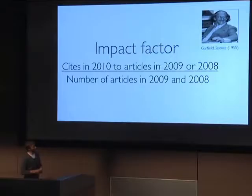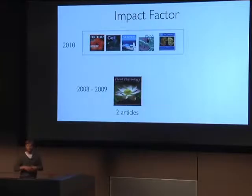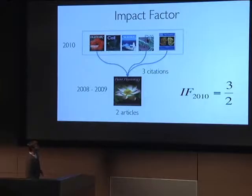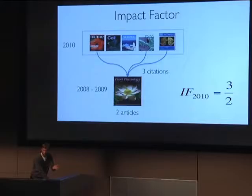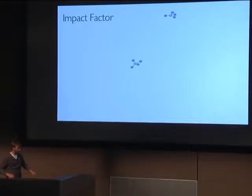Impact factor takes all the citations in, say, 2010, and looks at citations to articles in 2009 and 2008 — that two-year window — then divides by the number of articles in those same two years. For example, if plant physiology got three citations in this window and wrote two articles, its impact factor would be 1.5. This simple measure does not take into account the source of those citations — it's just counting edges on the node.